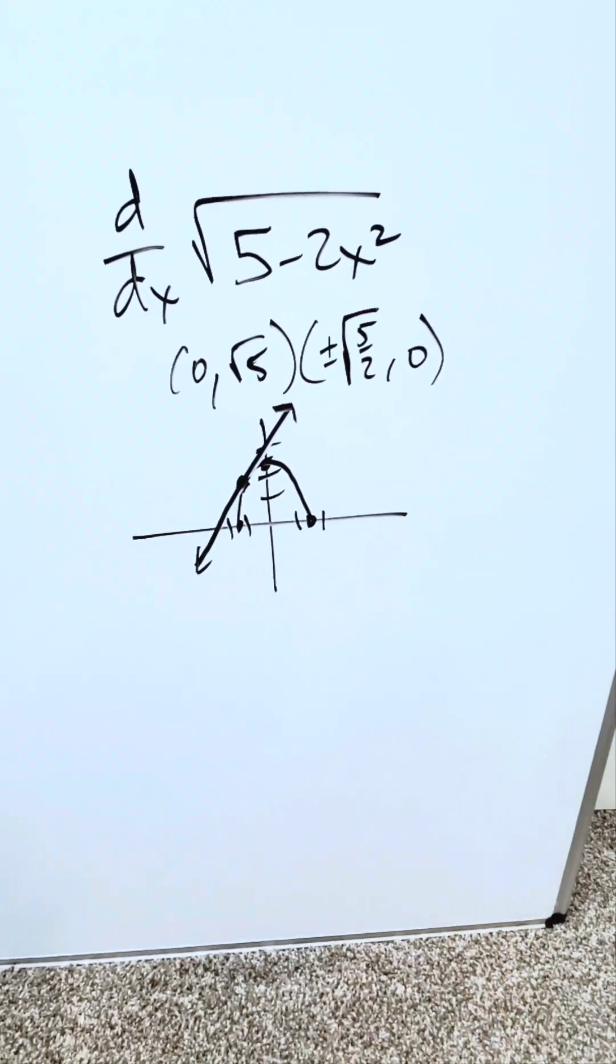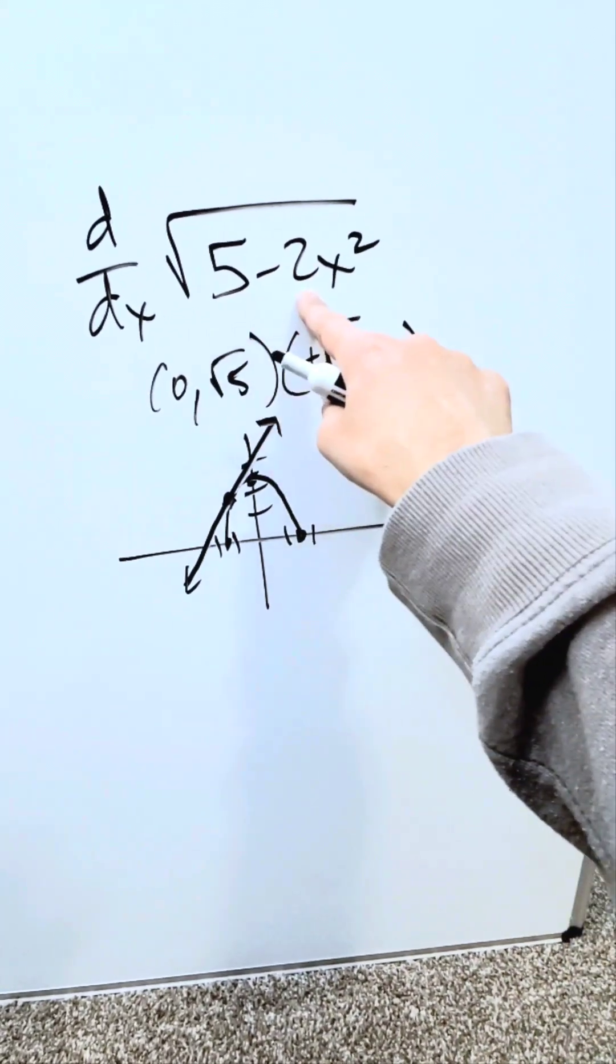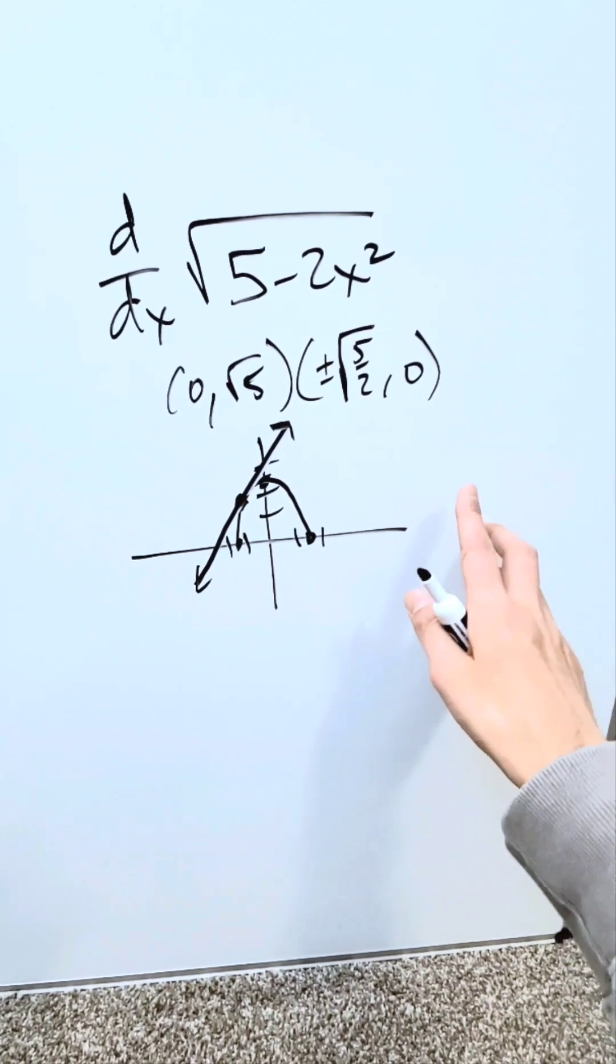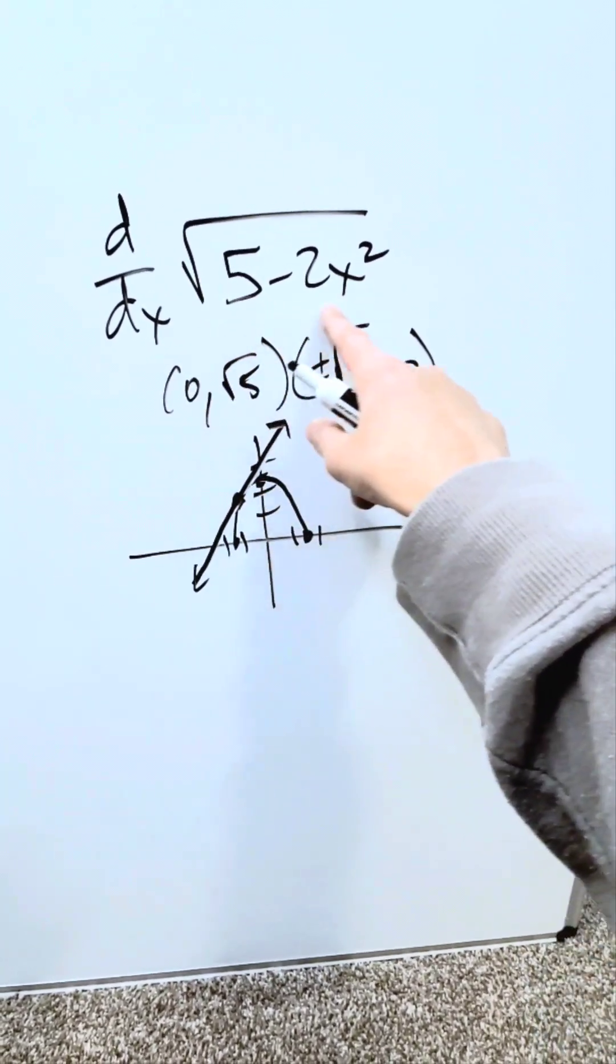The derivative will give it to me. If I take the derivative of this function, I'll get a value which is also a function. That will be the derivative function. Let's determine the derivative of this.